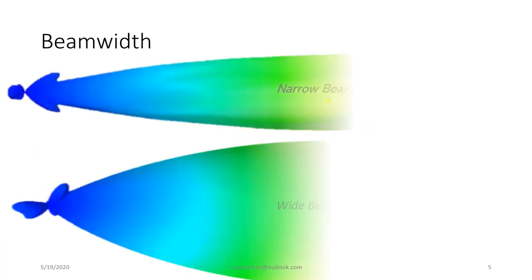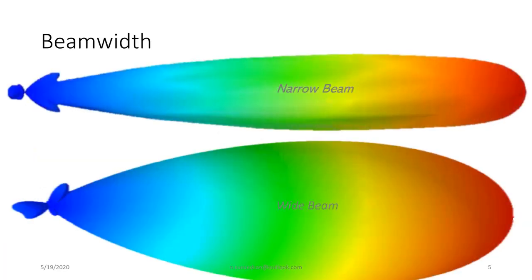Beam width: what is beam width? It is the width of the beam. A narrow beam width is preferred because it can travel a longer distance and will not interfere with other beams. So you always prefer a narrow beam width.